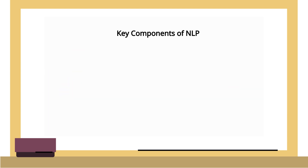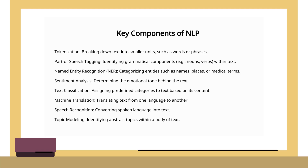To understand how NLP works, we should first look at its key components. These components that you see on the screen form the foundation of NLP and include processes like tokenization, which breaks down text into smaller units like words or phrases, and part of speech tagging.